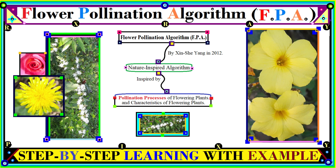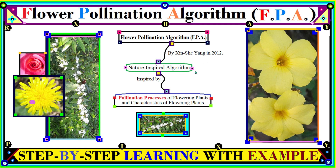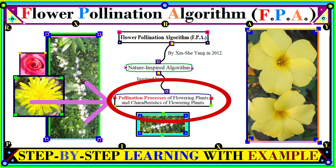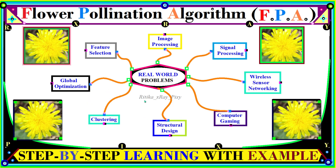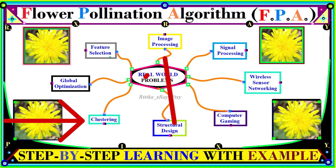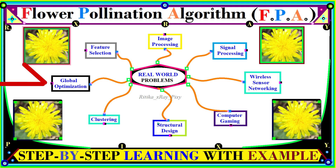The Flower Pollination Algorithm is a nature-inspired algorithm proposed in 2012. It is a nature-inspired, population-based metaheuristic optimization algorithm that is inspired by the flowering behavior of plants in nature. This algorithm mimics the pollination process in flowering plants and is superior to different metaheuristic optimization algorithms. We can use it to solve real-world problems in fields such as clustering, image processing, feature selection, structural design, and global optimization problems.